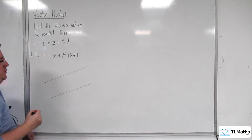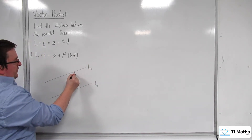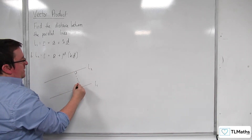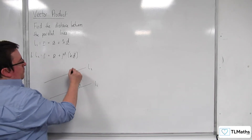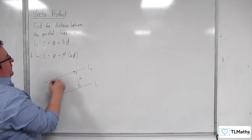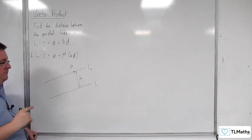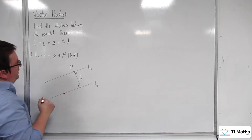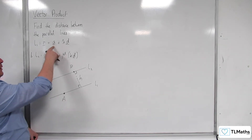Here are my two lines. Let's call this one L1 and this one L2. The shortest distance between L1 and L2 will be a line that is perpendicular to both, and I'm going to call that h. This point on L2 I'm going to call capital P, and it will have position vector lowercase p. I'm going to choose a point on L1 and call that capital A, with position vector lowercase a.